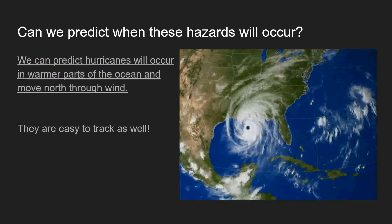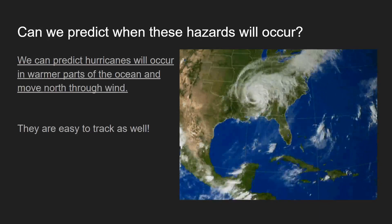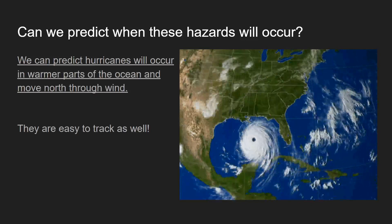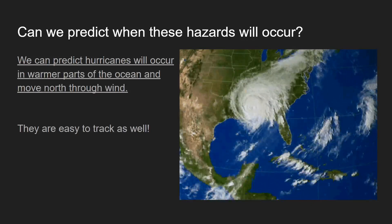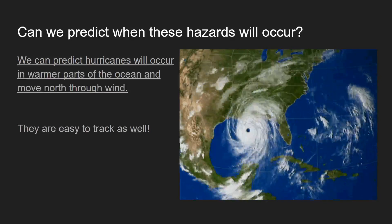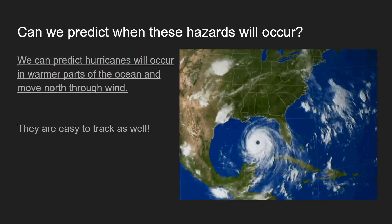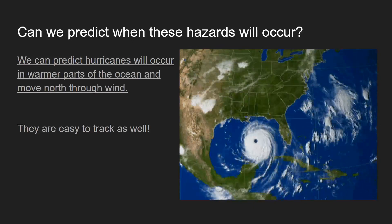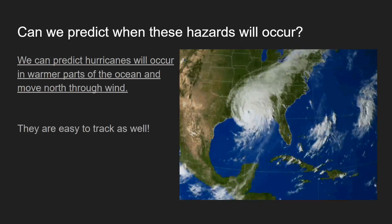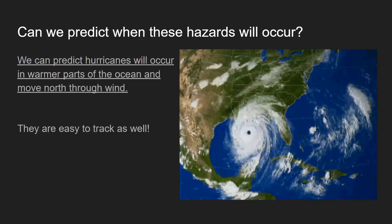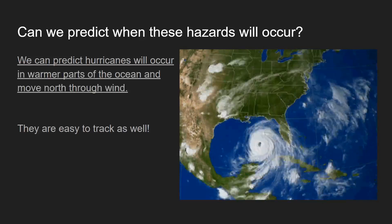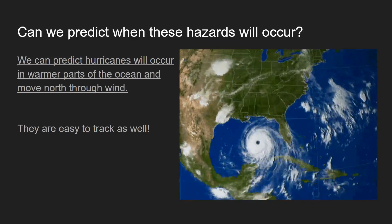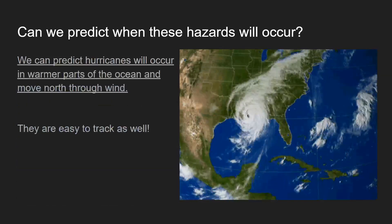We can predict hurricanes. We can predict they will occur in warmer parts of the ocean, and they always move north through various wind formations. They're easy to track because we have satellites, so we can track their trajectory and prepare for them. You've seen it on TV — people hearing about a hurricane, evacuating, and possibly saving their own life by leaving because the hurricane was so bad.